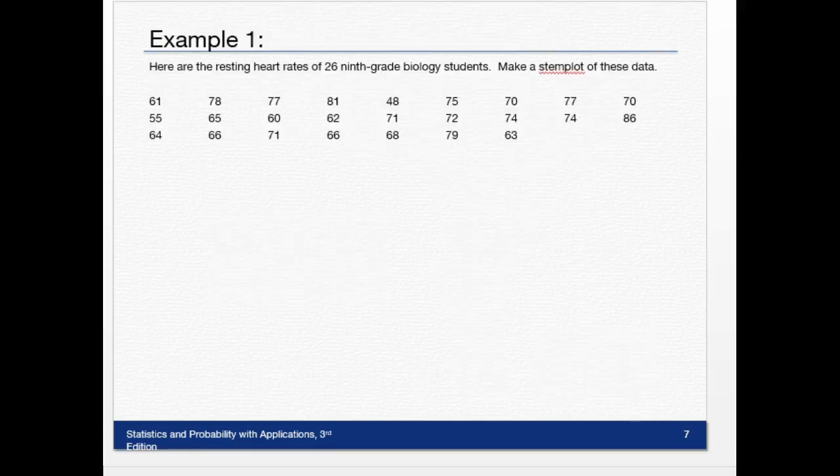Let's try to make one ourselves. Here are the resting heart rates of 26 ninth-grade biology students—make a stem plot of these data. The first thing I recommend when you make a stem plot is locate the highest value in your list of data and the lowest value, because that'll help you determine what your stems will be. Looking through this, 86 is the highest—is anything lower than 48? No, there's nothing lower than 48.